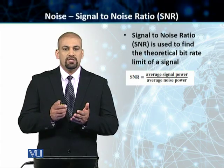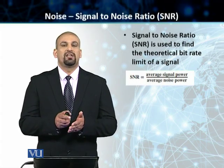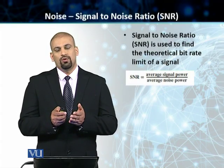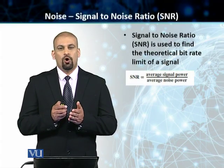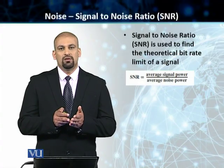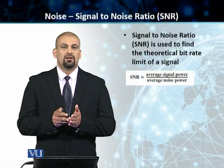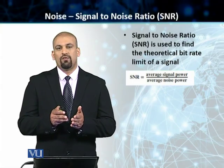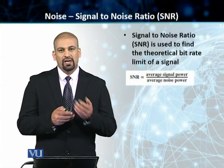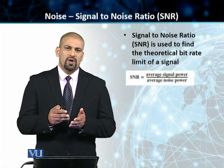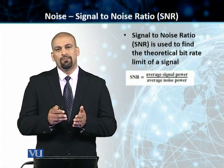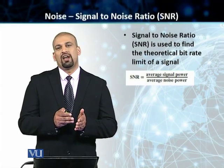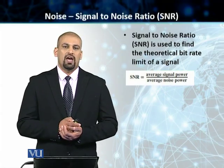A related concept is the signal-to-noise ratio. Signal-to-noise ratio is the ratio of the average signal power — or average signal strength — divided by the strength, or the power, of the noise. In both cases, we take average values because these two quantities keep on changing. So we always assume that we have average values.